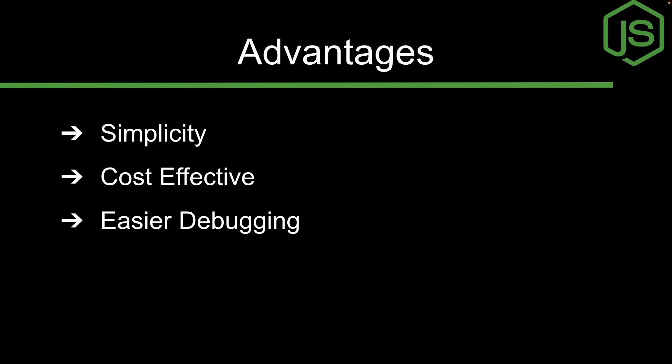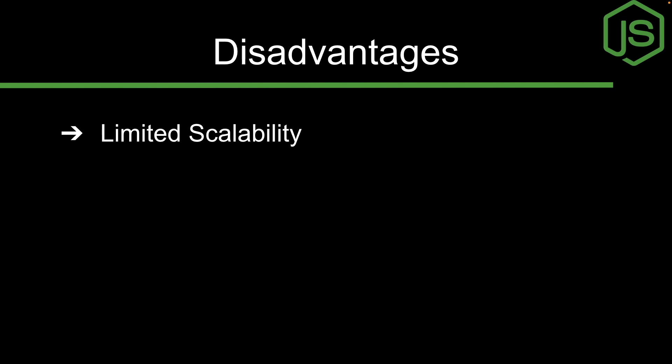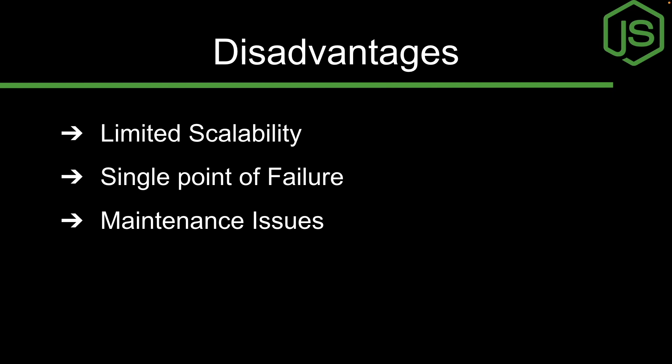There are also challenges with monolithic architecture. The first is limited scalability — since all components are tightly coupled, it's challenging to scale individual components separately. The second is single point of failure — any failure in one component can affect the entire application. There are also maintenance issues — as the application grows, any changes to a component require taking down the entire application.